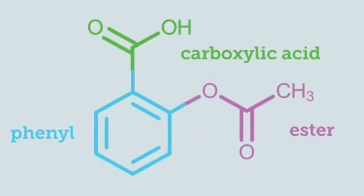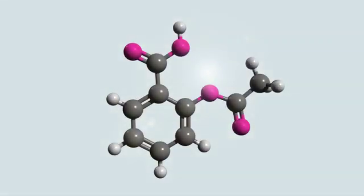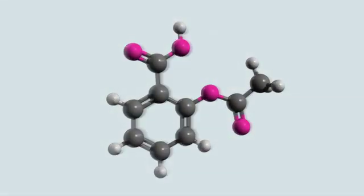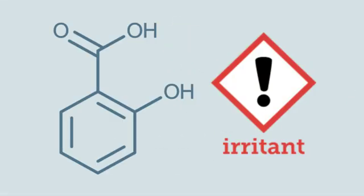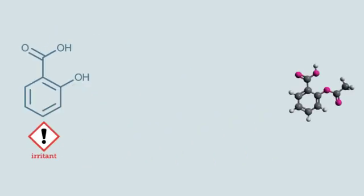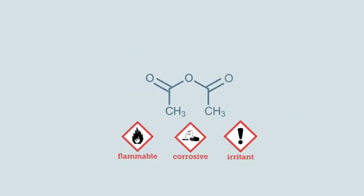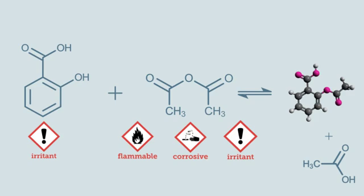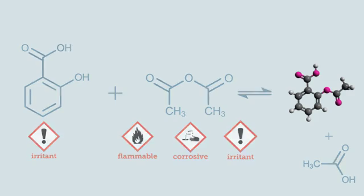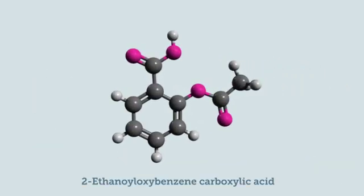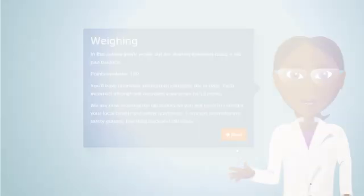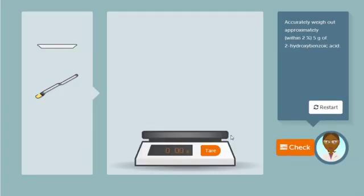Aspirin contains a carboxylic acid group, an ester group, and a phenyl group. Aspirin is created using a compound called 2-hydroxybenzoic acid by esterification with ethanoic anhydride under acid-catalysed conditions. The chemical name for aspirin is 2-ethanoyloxybenzene carboxylic acid.